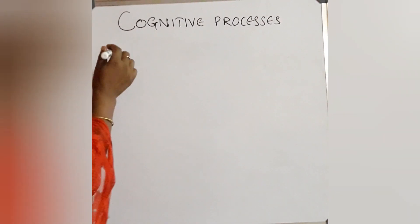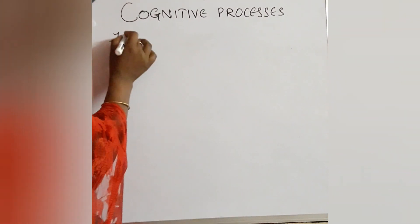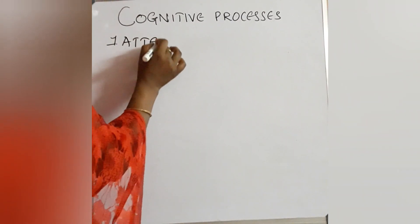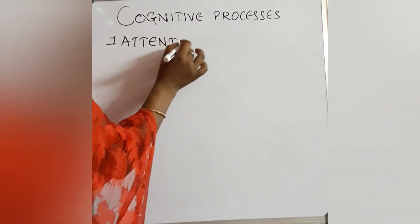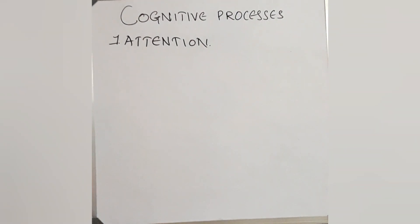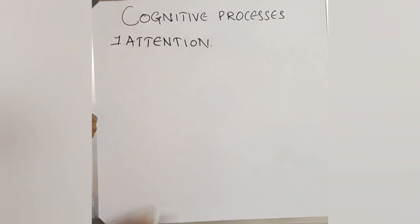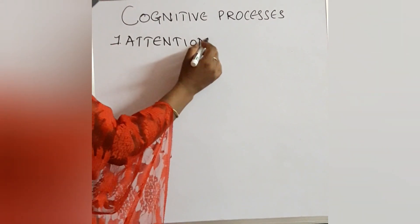First we should know what is cognition. Where we are using our reasoning, imagination, thinking, it is called cognitive activities. So under cognitive processes, first we are going to learn attention. There are several cognitive processes. First one is attention. Always in psychology, first we should write something about the topic in introduction.